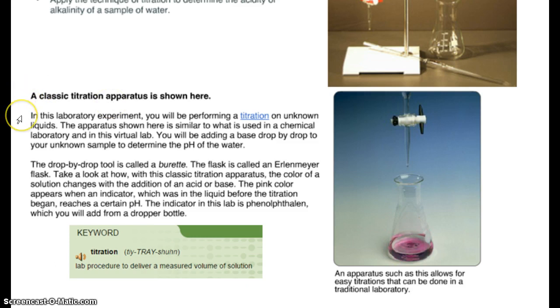A classic titration apparatus is shown here. In this lab experiment, you will be performing a titration on unknown liquids. So titration, a lab procedure to deliver a measured volume of solution. In other words, we want to know exactly how many drops and therefore how many milliliters of the solution we're adding from the burette into the flask. The apparatus shown here is similar to what is used in chemical laboratory and in this virtual lab. You'll be adding a base drop-by-drop to your unknown sample to determine the pH of the solution. It says water, but water is usually 7.0, so we're going to use it for a solution. The drop-by-drop tool is called a burette. The flask is called an Erlenmeyer flask. Take a look at how, with this classic titration apparatus, the color of a solution changes with the addition of an acid and base. So it started out clear, and now it's going to be pink.